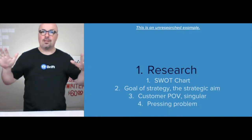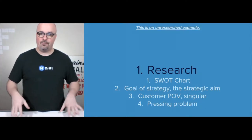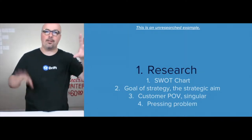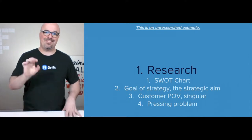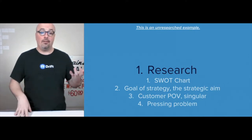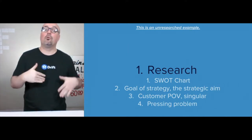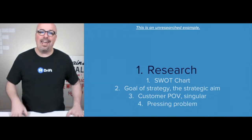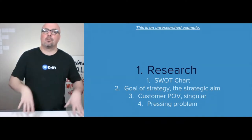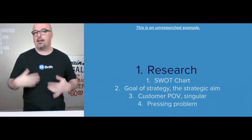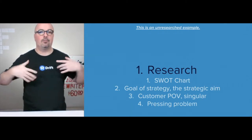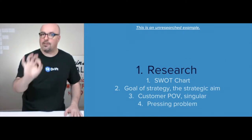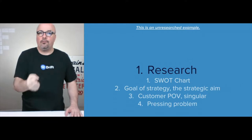The first step is Research. We put together what we call a SWOT chart — strengths and weaknesses, opportunities, and threats for this specific brand — and establish a clear goal for the strategy. Number three is the customer point of view: having a clear understanding of who they are, what matters to them, what they're feeling, what they're seeing, doing, and focusing on a singular point of view.